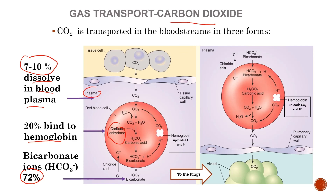Bicarbonate ion, along with the other forms of CO₂, is transported to the lungs. In the lungs, bicarbonate ion converts back to carbonic acid and releases carbon dioxide. Similarly, plasma releases its CO₂ and hemoglobin releases its CO₂. All forms are transported to the alveoli where carbon dioxide is excreted out of the body.